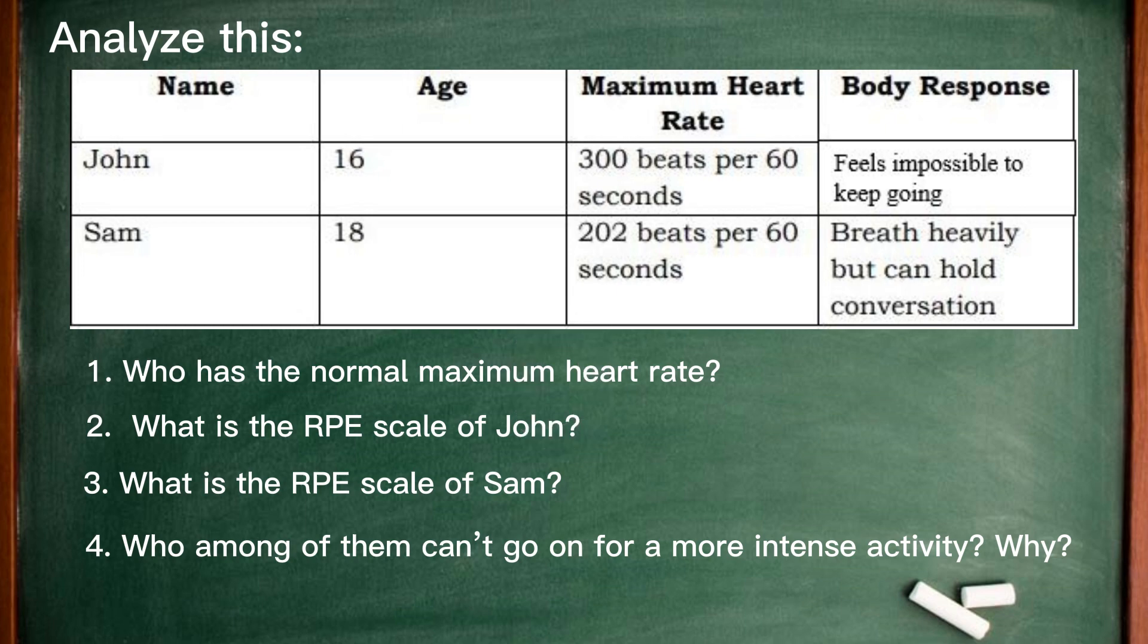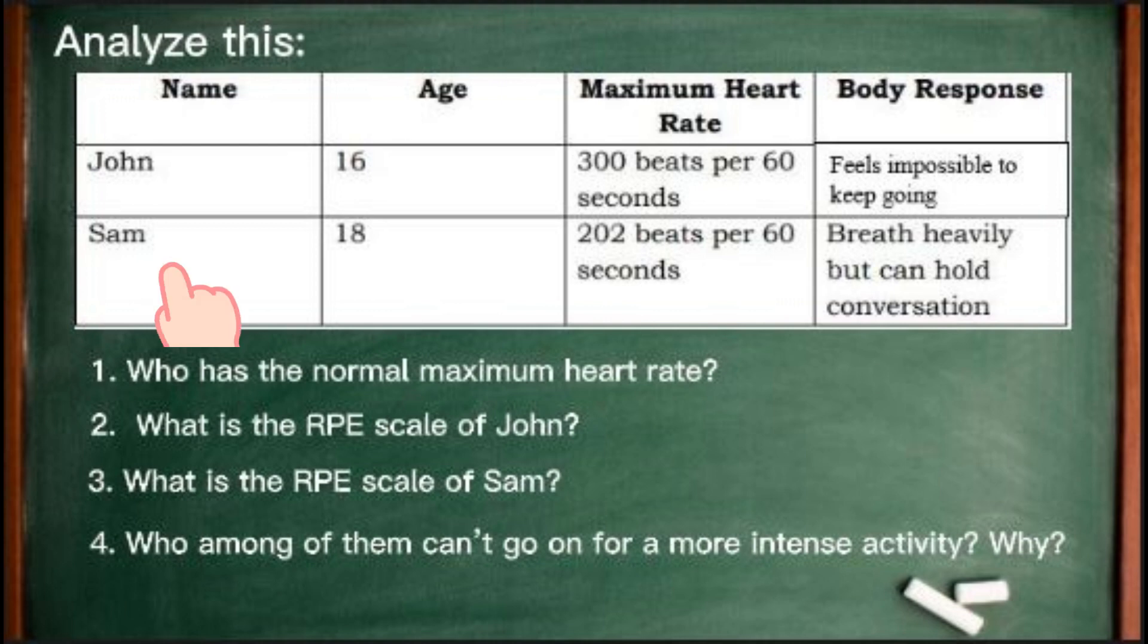Answers: Number one, it is Sam who has the normal maximal heart rate. John's RPE scale is 10.